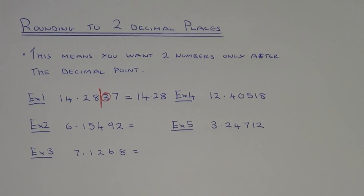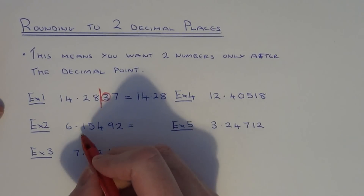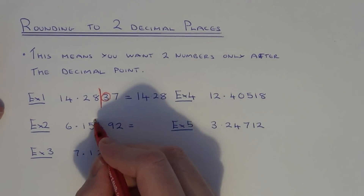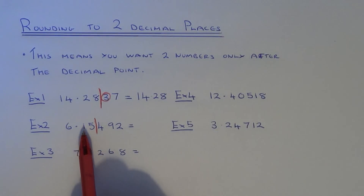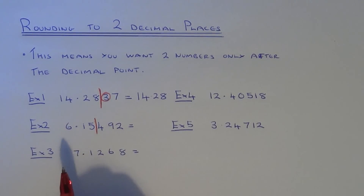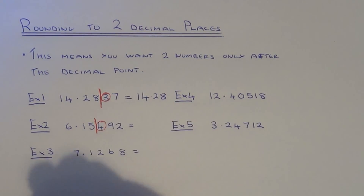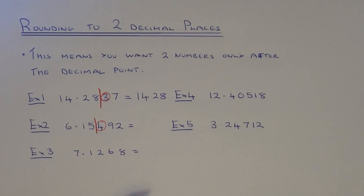Let's have a look at example two. We've got to round it off to two decimal places, so we want two numbers after the decimal point — one, two. We're going to cut our number off there. Your two possible answers are 6.15 or 6.16. Look at your number after the line — it's a four, which is less than five, so we round the number down, and the number stays as 6.15.